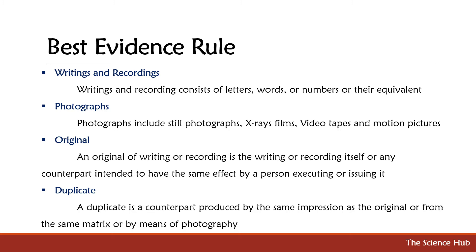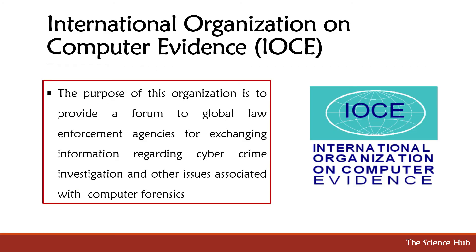Writings and recordings consist of letters, words, or numbers or their equivalent. Photographs include still photographs, X-rays, films, video tapes, and motion pictures. An original of a writing or recording is the writing or recording itself, or any counterpart intended to have the same effect by a person executing or issuing it. A duplicate is a counterpart produced by the same impression as the original, or from the same matrix, or by means of photography.